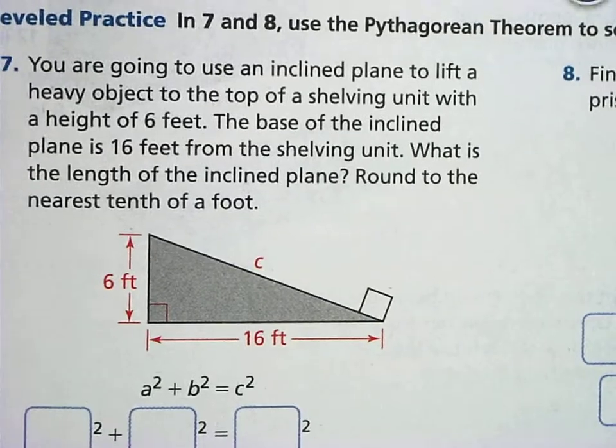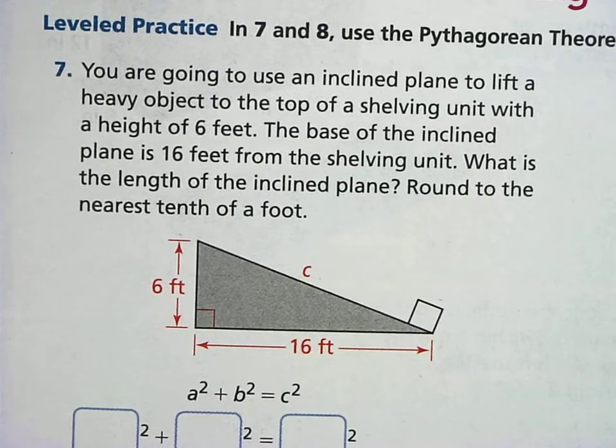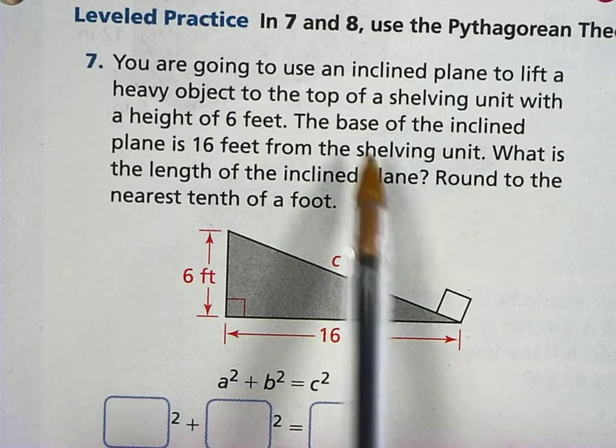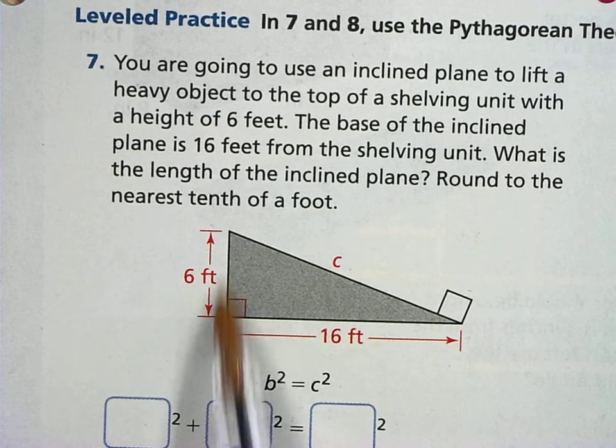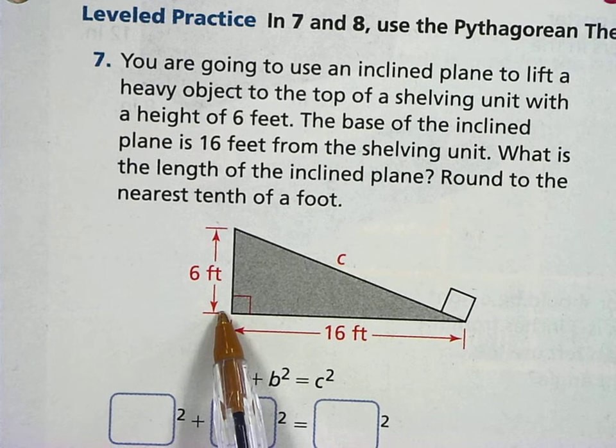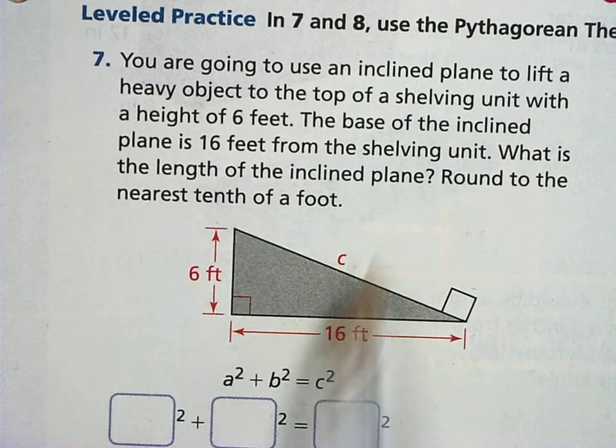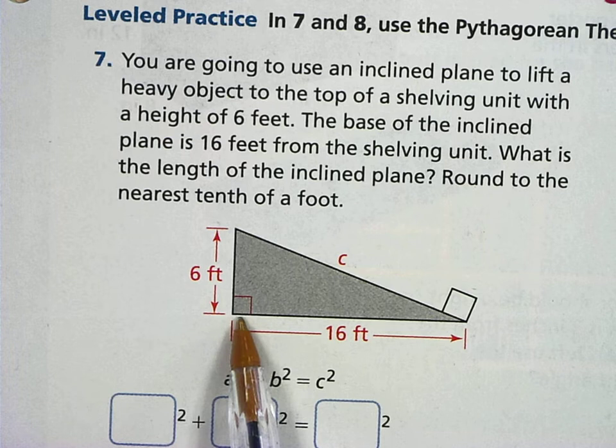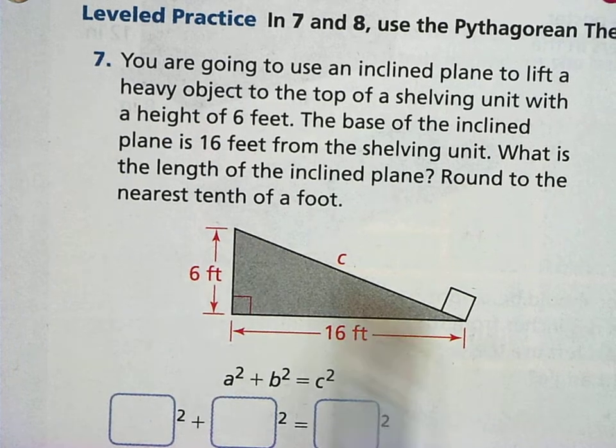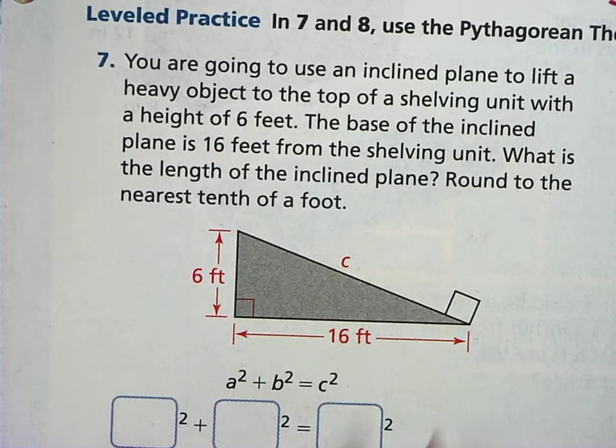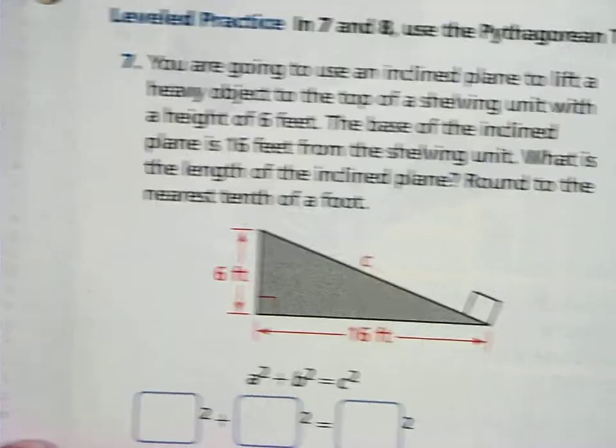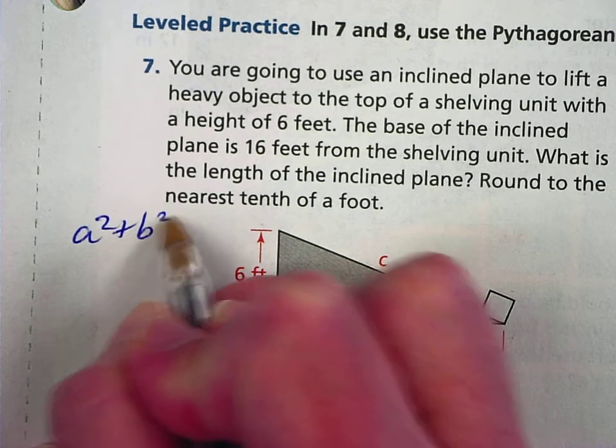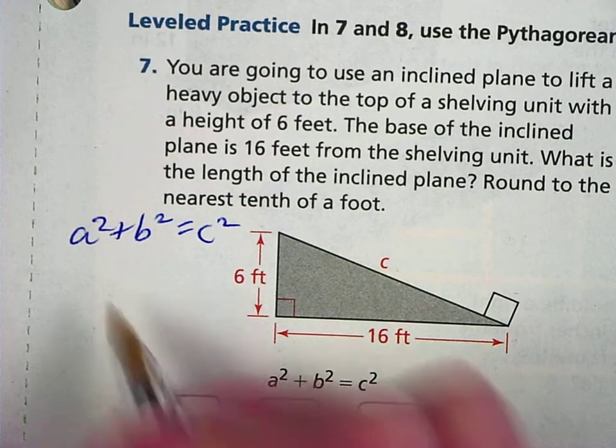You have this incline plane right here. It says you're going to lift a heavy object to the very top of the shelf. The height of your plane is six feet, so that's labeled. The base of the incline plane is 16 feet from the unit, so it's 16 feet long. What's the length of the incline plane? We're missing the hypotenuse. These are your legs, connected to your right angle, your A and B. So A squared plus B squared equals C squared. We're going to figure out how long this has to be.